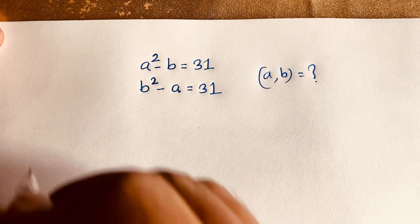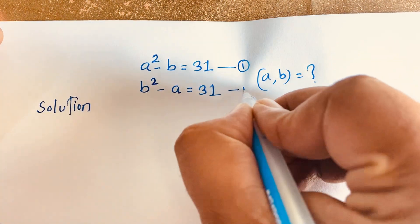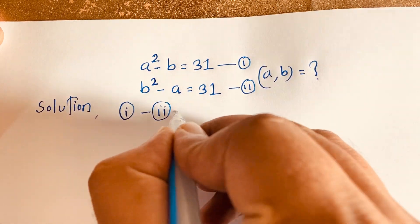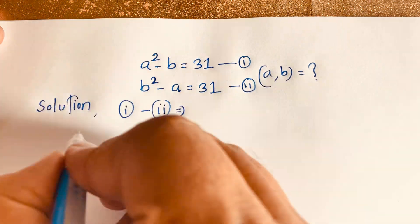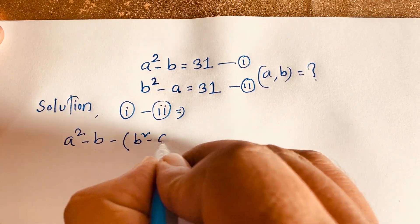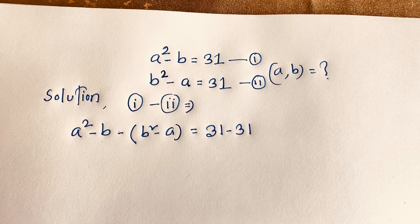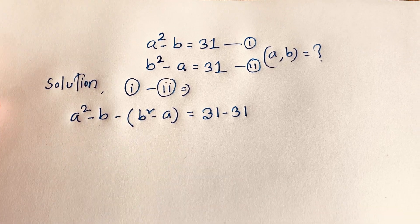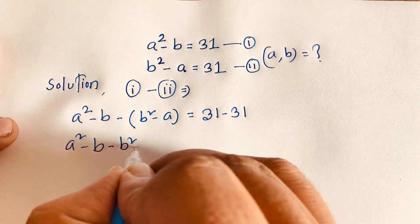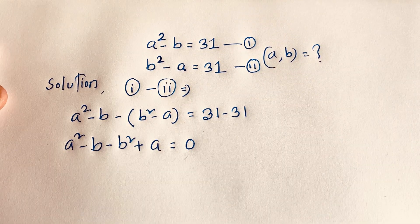How to solve this question? First of all, I subtract the first equation from the second equation. Our first equation is A squared minus V, and the second equation is V squared minus A, equal to 31 minus 31. So we get A squared minus V minus V squared plus A is equal to 0.